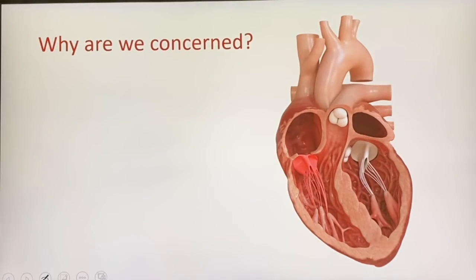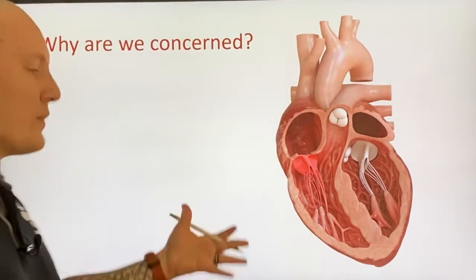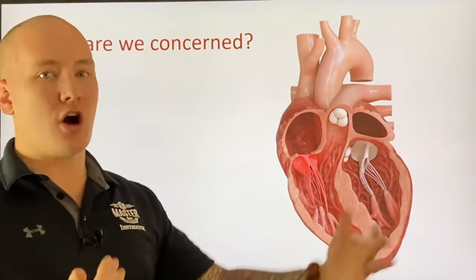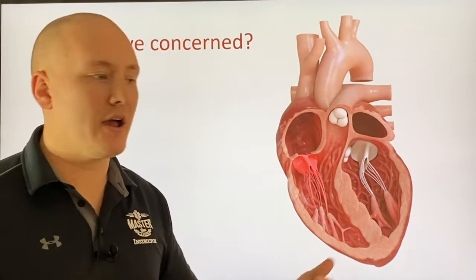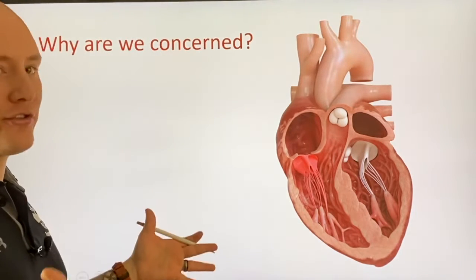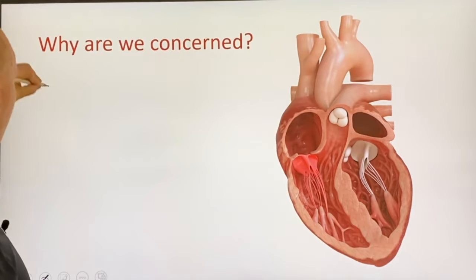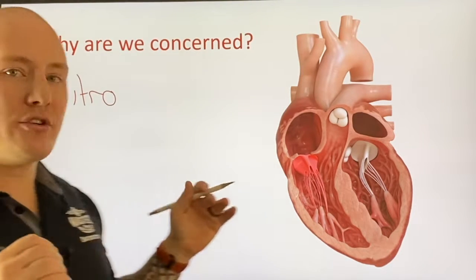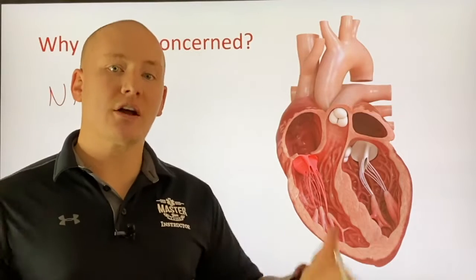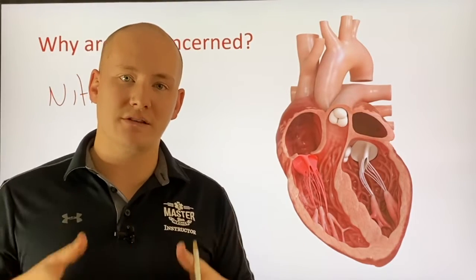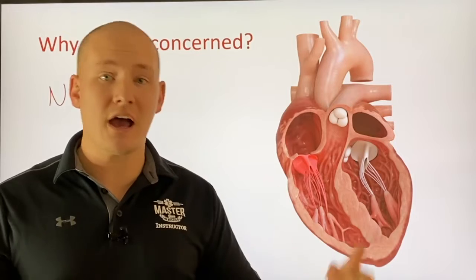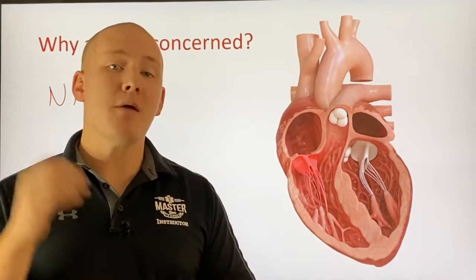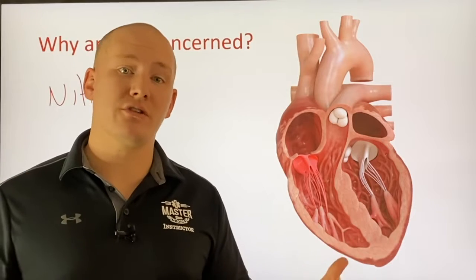It's important to focus on why we were concerned in the first place — what the theory is as to why we don't give nitroglycerin, or use it with caution, in an inferior MI. The truth is we know that nitro is a vasodilator. Nitro converts into nitric oxide in the body, and nitric oxide has a direct effect on both the venous and arterial sides, causing vasodilation on both sides.